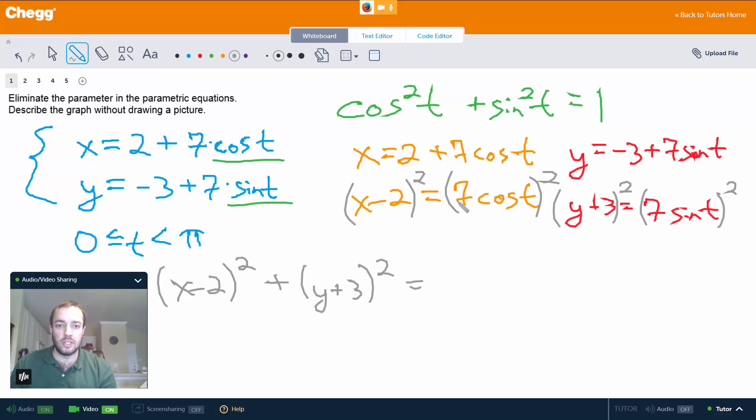So (x - 2)² + (y + 3)² — well, (x - 2)² is 7² times cos²t, so that's 7²cos²t. And then plus (y + 3)² — that's going to be 7² times sin²t.